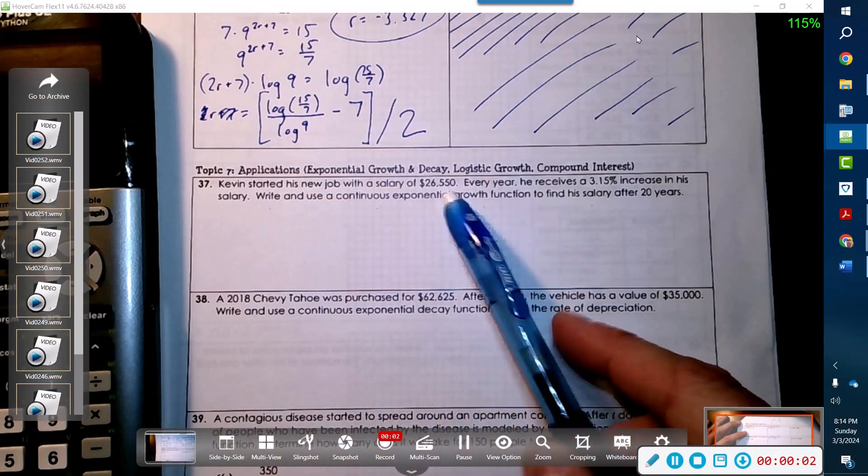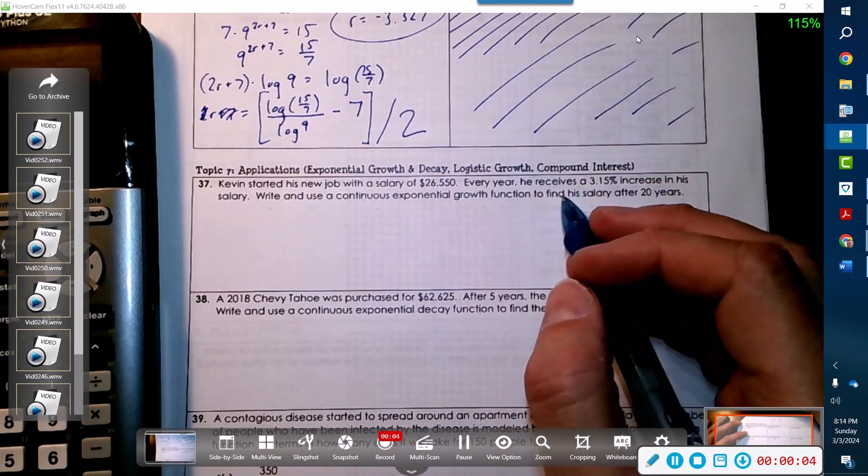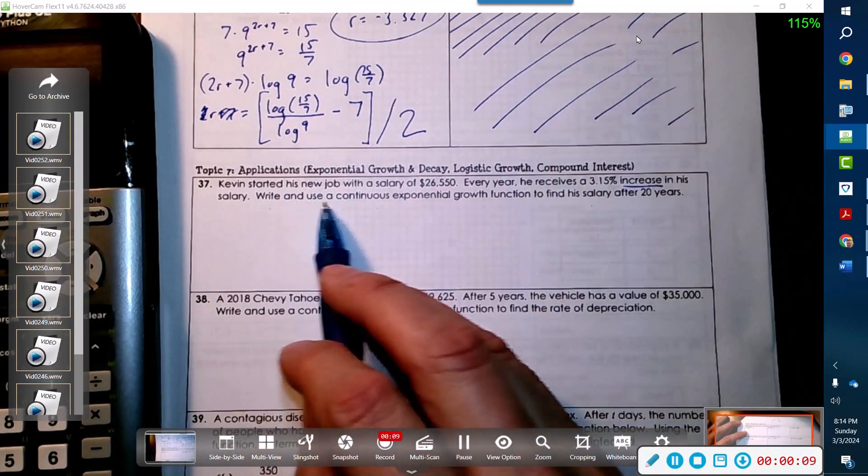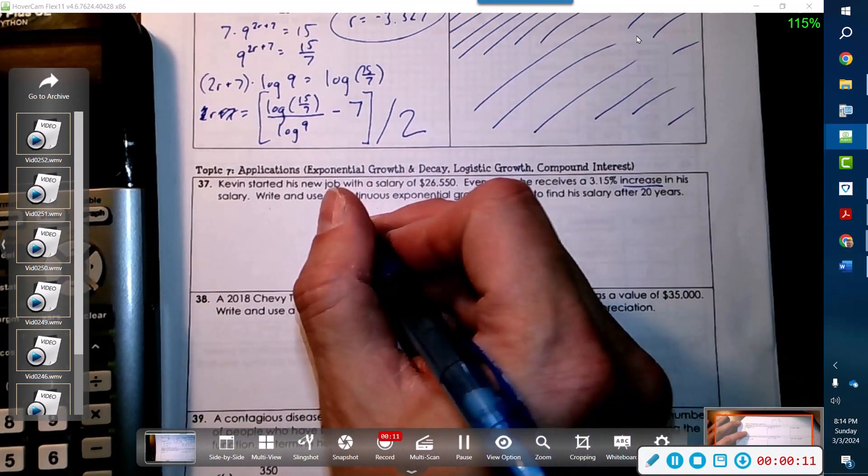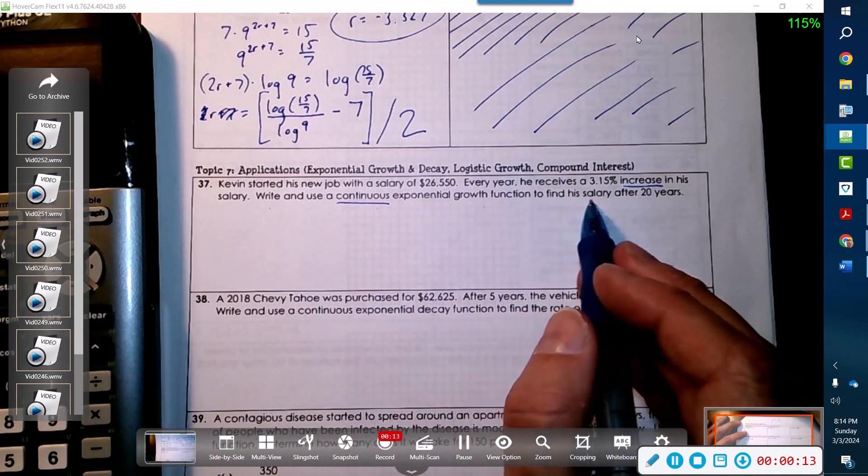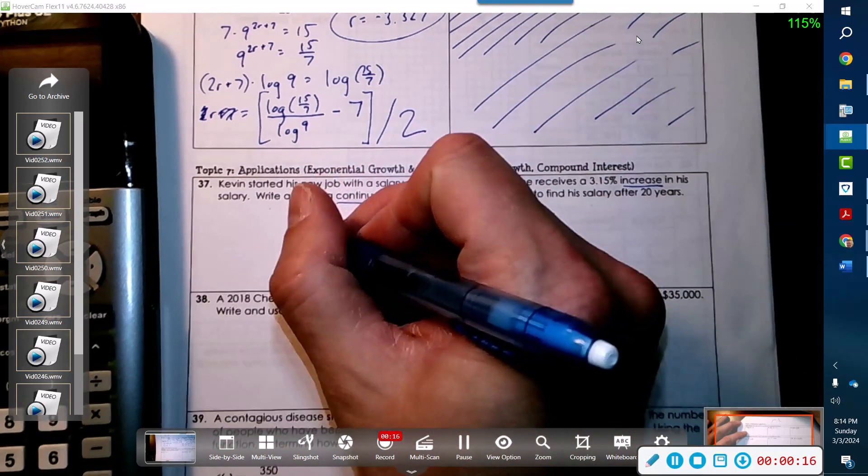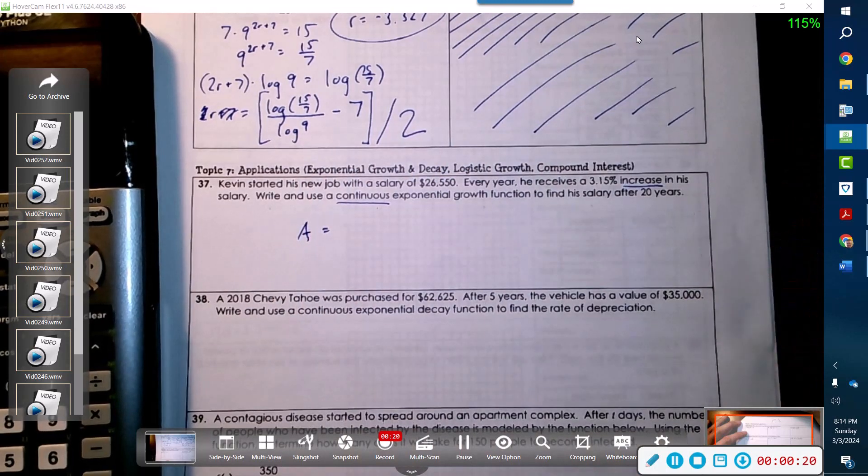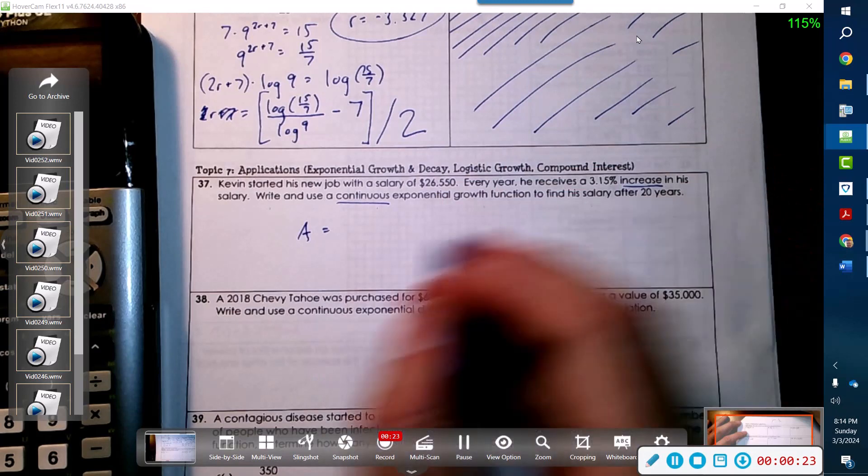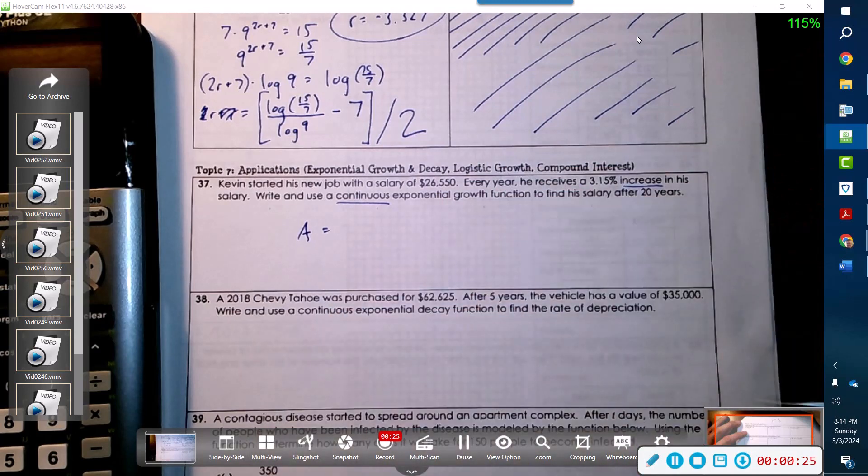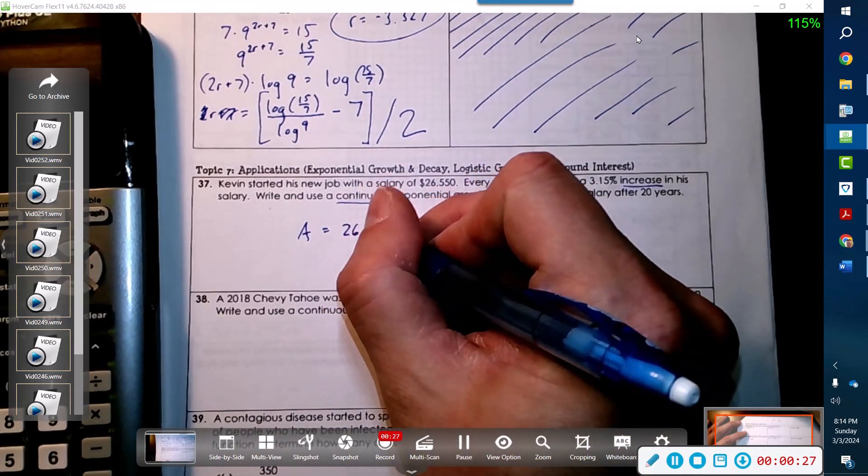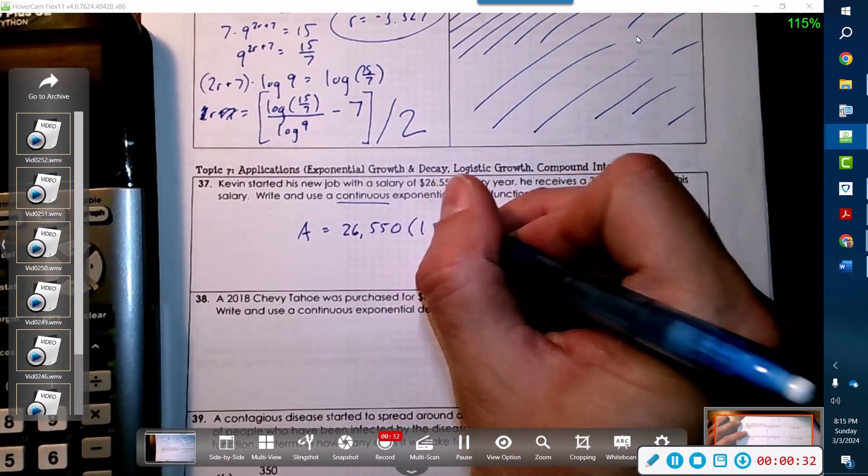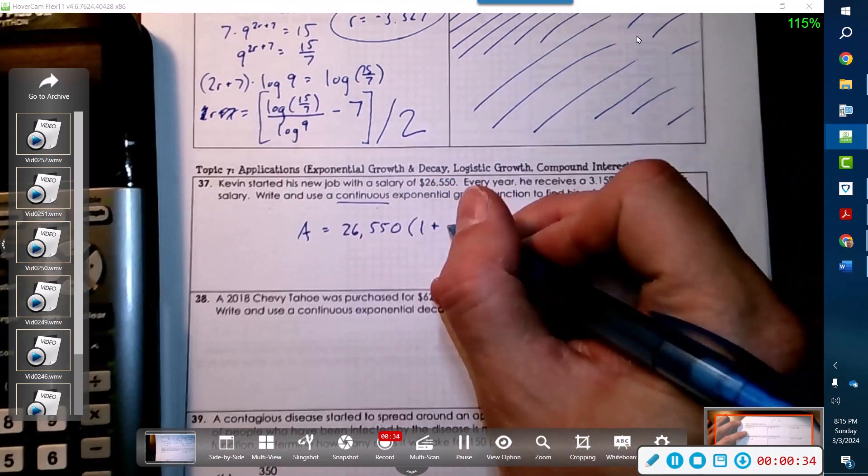Kevin started his new job with a salary of $26,550 and each year he receives a 3.15% increase in his salary. We need to use a continuous exponential growth function to find his salary after 20 years. This is nice because we don't have to solve for time - they didn't ask when his salary equals a certain amount.